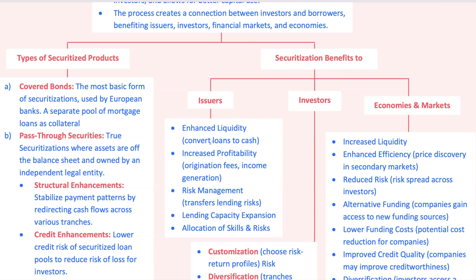But it doesn't stop there. Securitization also boosts profitability. Banks earn not only from originating loans, but also from selling them to the SPE, collecting fees in the process. And by passing on the loan risk to investors, banks manage their balance sheets more effectively, keeping risk lower than if they held all loans in-house.